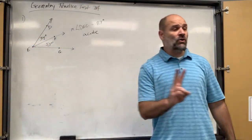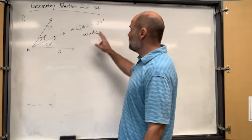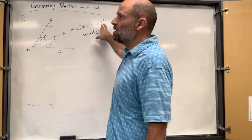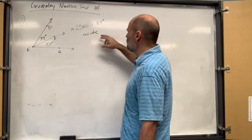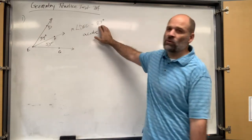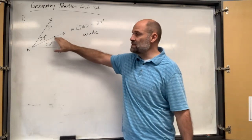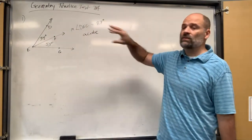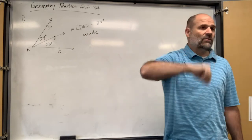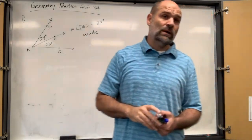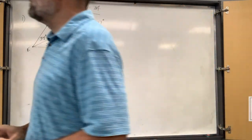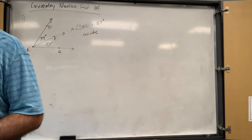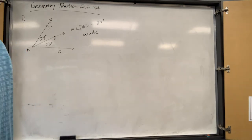Make sure you answer both questions: do the math, add up the angles to get the total angle, and then tell me whether it's acute or obtuse. If you end up with more than 90 degrees, I'm asking about the resulting angle DEG — is that acute, obtuse, right, or whatever.